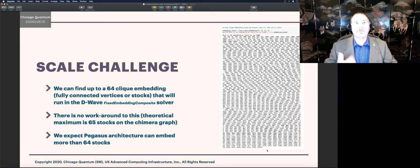And at 64 stocks, if we use fixed embedding, because we can use lazy, we can use fixed embedding, or we could use just embedding composite. It doesn't always work. If we run 64 stocks, we can run it four times or 14 times before it works. We are expecting Pegasus, though, to give us the ability to run more stocks.